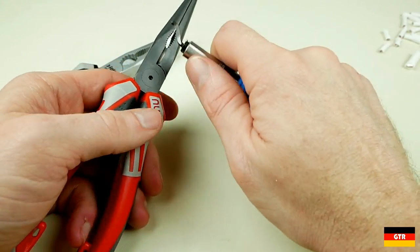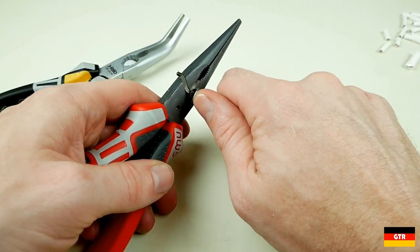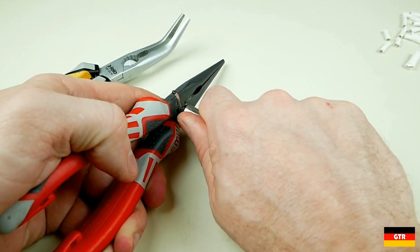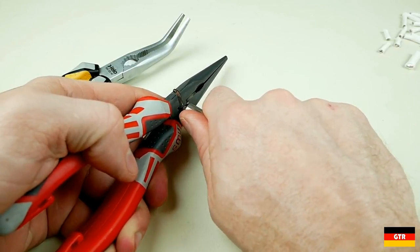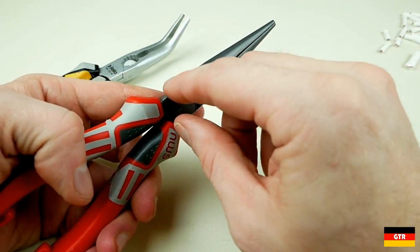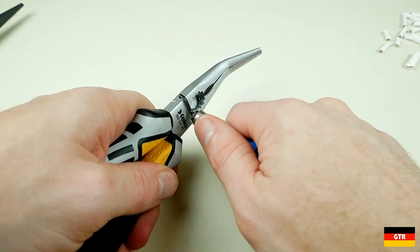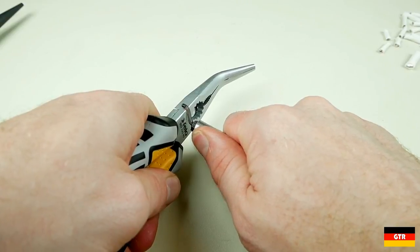To verify this, I took a carbide deburring tool against the edge of both pliers and with the black finish, I was able to scrape it right off. With the chrome plated finish, I was barely able to scratch it and as you can tell by the sound, it wasn't gripping into the underlying material.